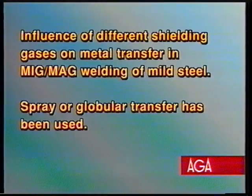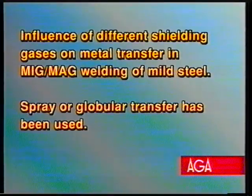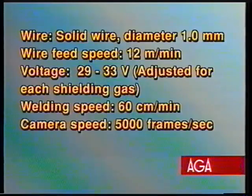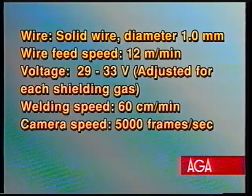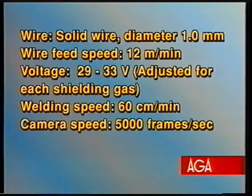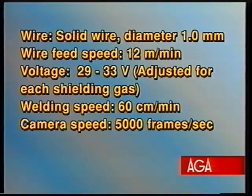This part will concentrate on the influence of some shielding gases on metal transfer in MIG-MAG welding of mild steel. All filmed sequences are made with constant wire feed speed of 12 meters per minute. All other welding conditions are the same except for the arc voltage, which has been adjusted for every shielding gas.